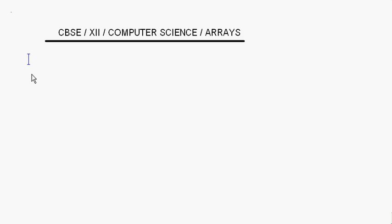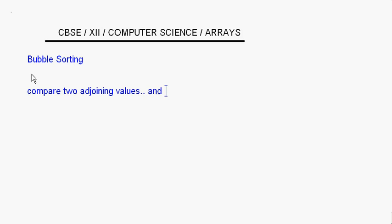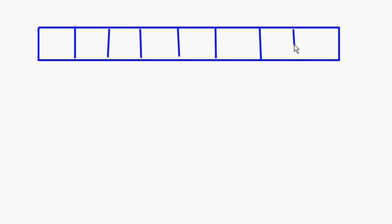Let's do bubble sorting in arrays today. In bubble sorting, we have to compare two adjoining values and interchange them if there is a need. Now I'll just show a small array and how the comparisons are made, then we'll write the program for this.